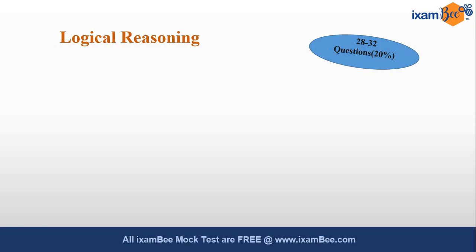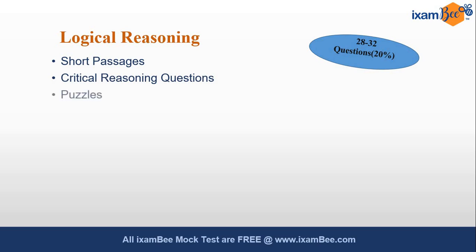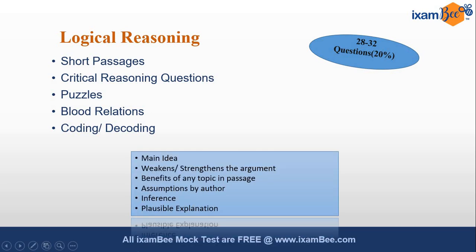The fourth section in the exam is logical reasoning. There will be short passages and critical reasoning questions. Other areas include puzzles, blood relations, coding, and decoding. Critical reasoning questions may ask: what was the main idea of the passage, what weakens or strengthens the argument of the author, what were the benefits of any topic in the passage, assumptions made by the author, inference of the passage, or what could be the plausible explanation of any statement used by the author.